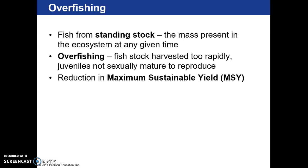We fish from what's called standing stock — basically what's available in an ecosystem at any given time. One of the really difficult things is finding the line you don't want to cross to avoid overfishing. If we're harvesting fish too quickly or taking juveniles out of the ecosystem, we're preventing a normal rate of reproduction. Fisheries management is partly responsible for making sure that balance is maintained so species can still reproduce at a normal or above-normal rate.